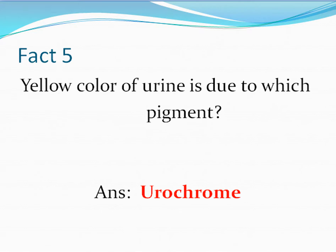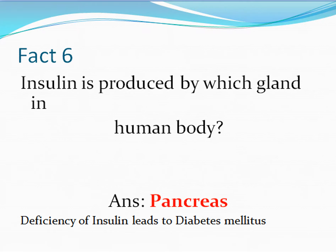Insulin is produced by which gland in the human body? The answer is the pancreas. Deficiency of insulin leads to a disease known as diabetes mellitus, and in this condition an increased level of sugar is found in the body, which can affect many organs such as the eyes, kidneys, brain, and heart.